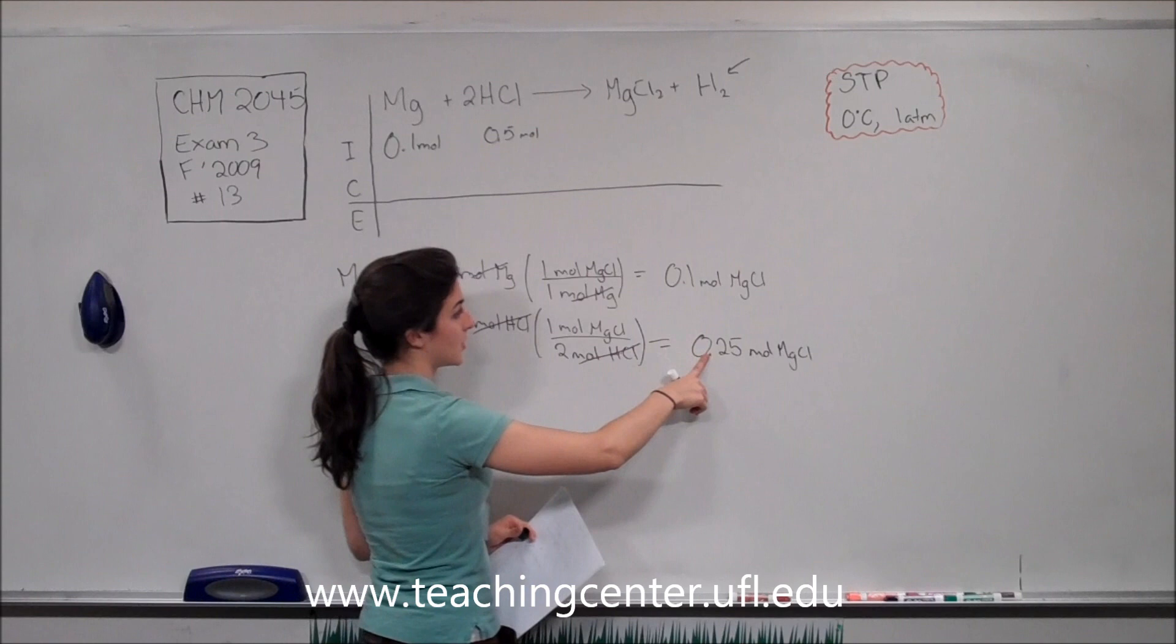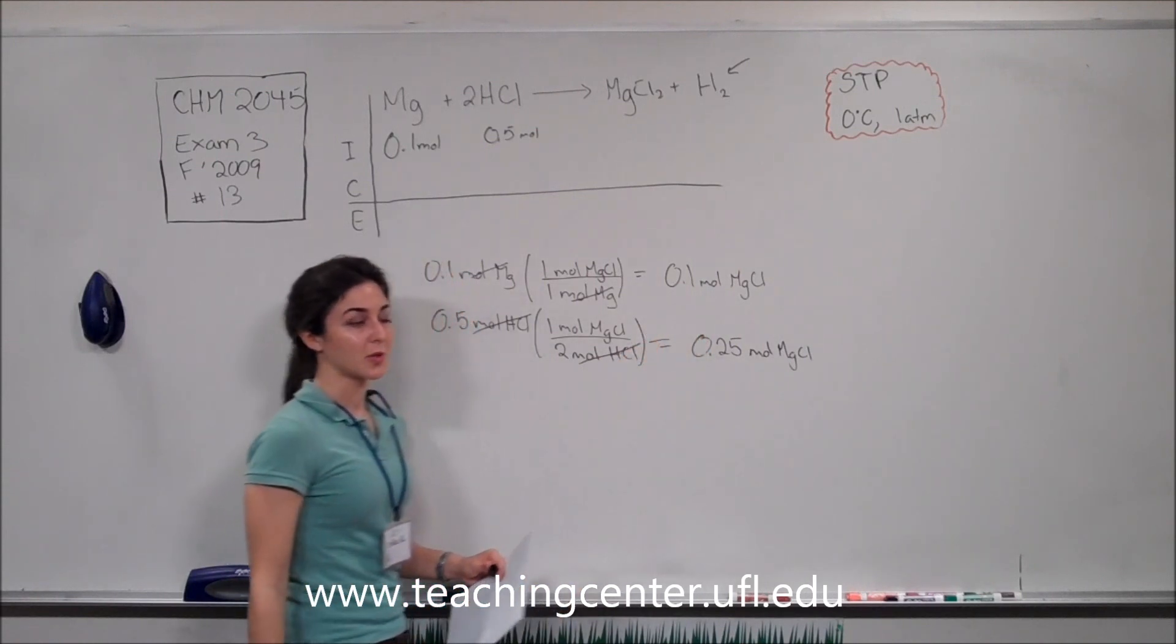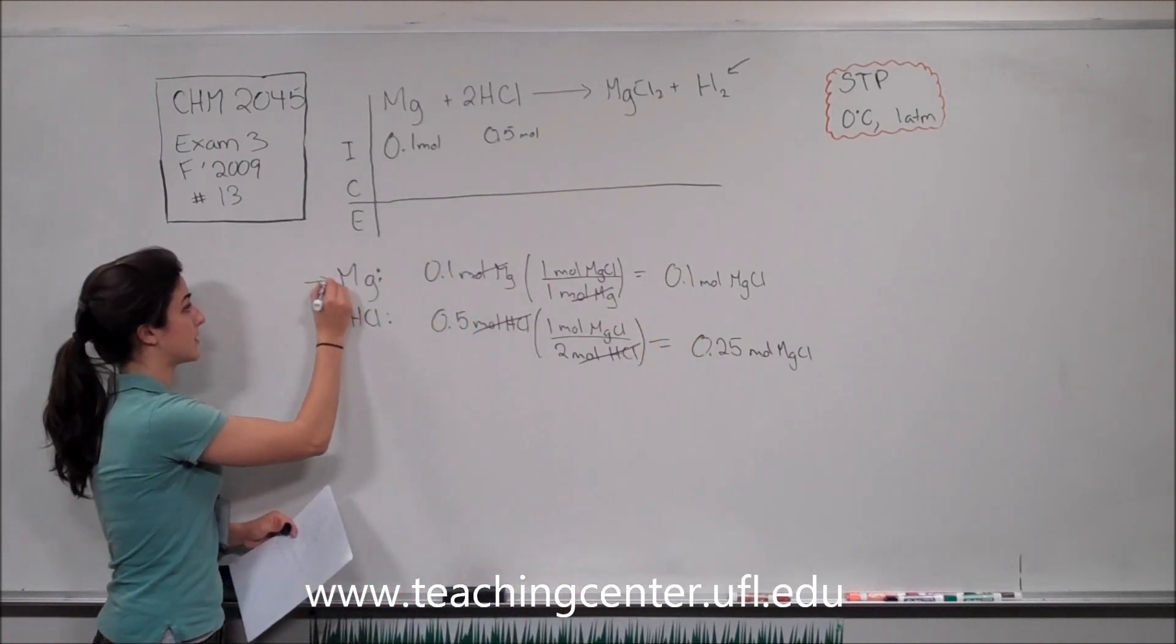So from looking at these two, we see that we produce less of the magnesium chloride. That means magnesium is our limiting reagent.